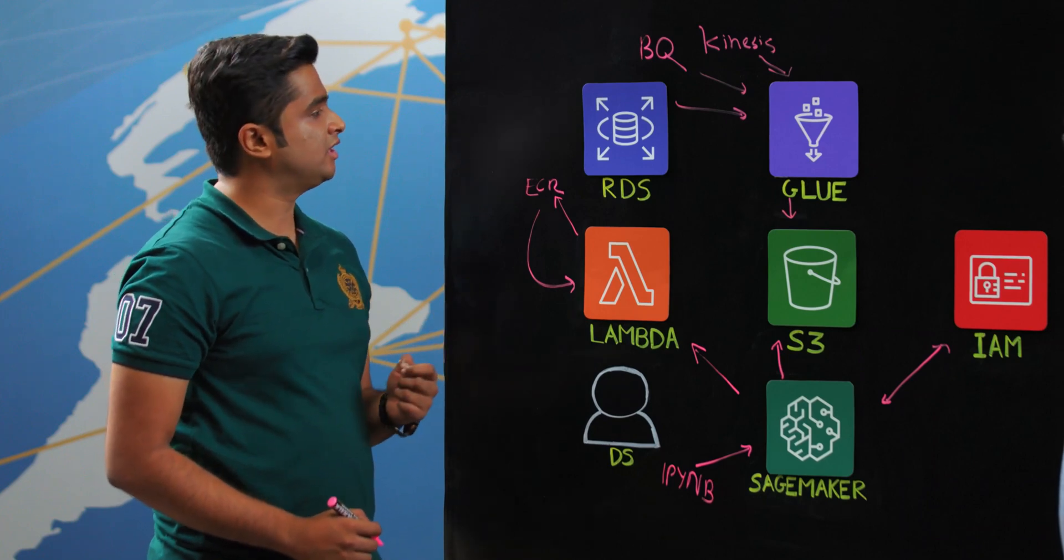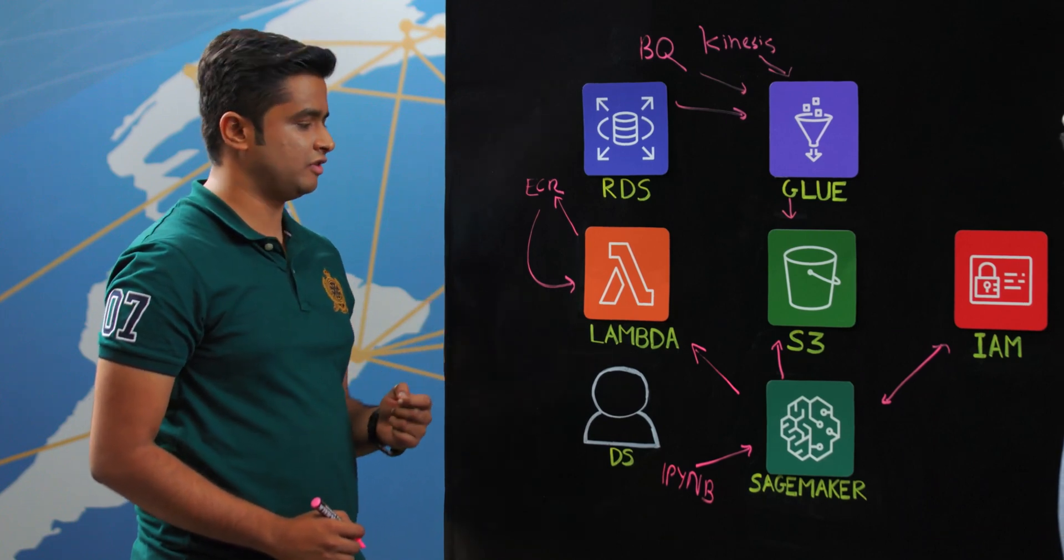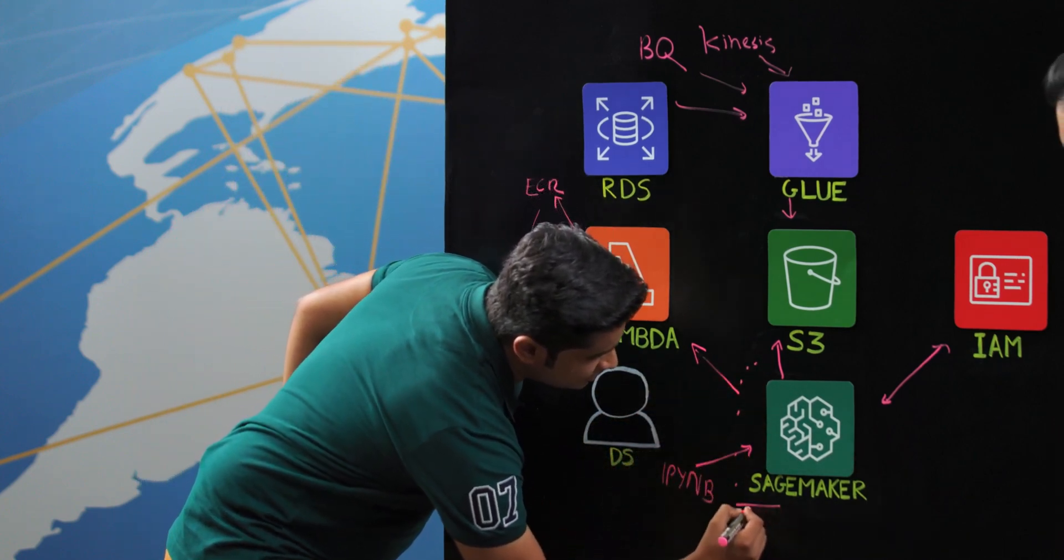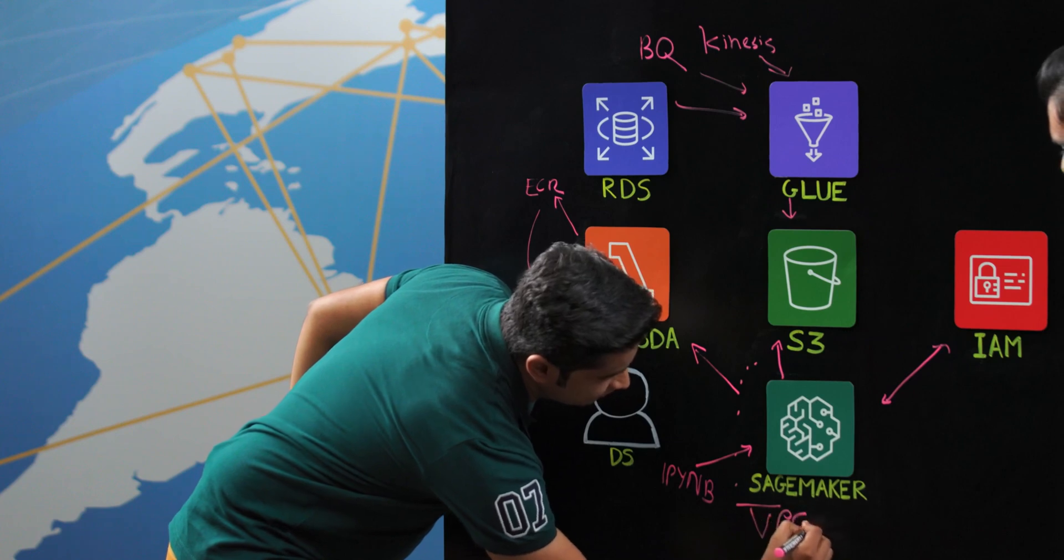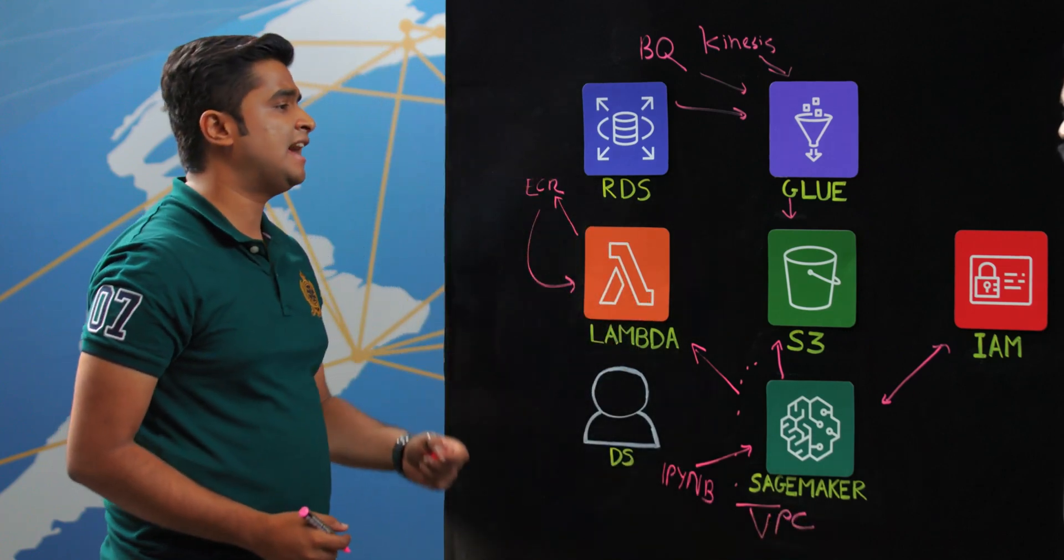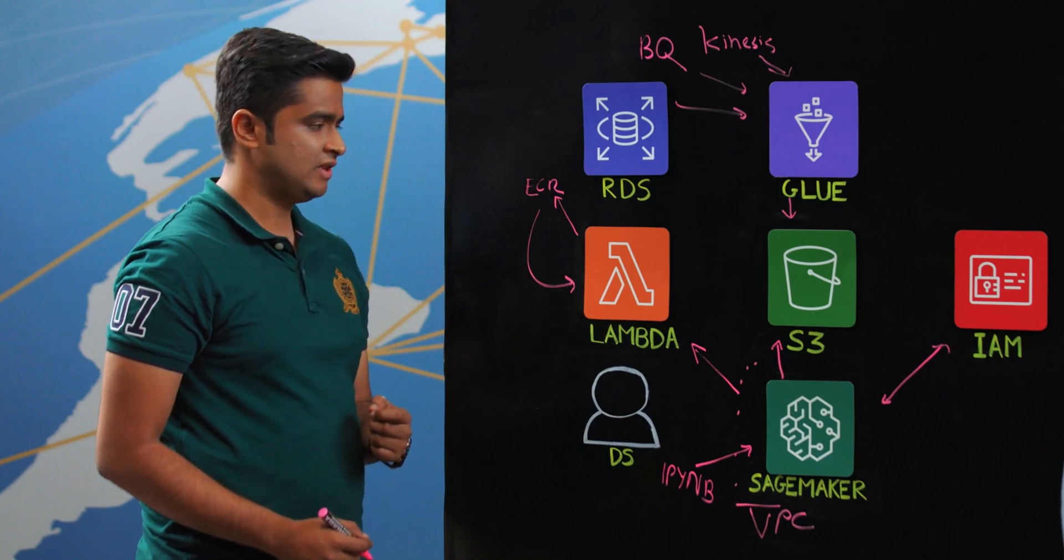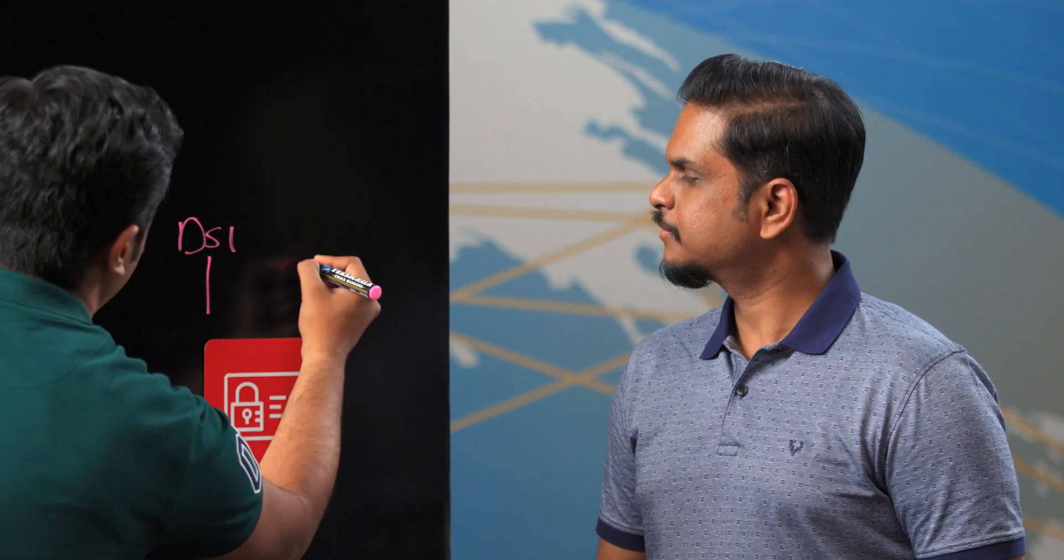As a fintech company, security is a very big concern for us and we try to harden it wherever possible. On the primary layer, everything inside SageMaker is running inside our own VPC. This VPC is our own private VPC with very controlled egress and ingress.